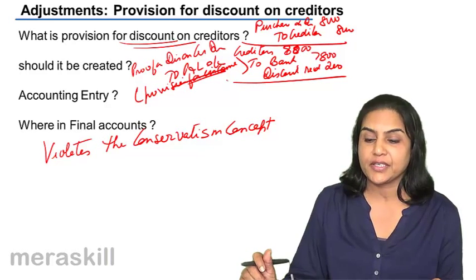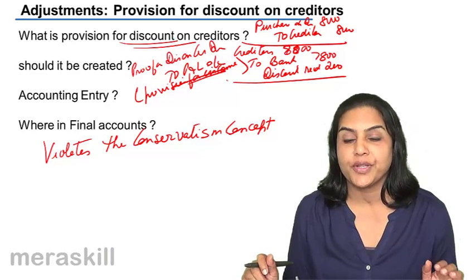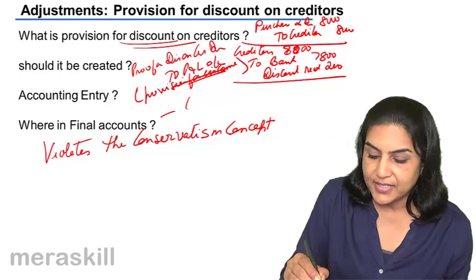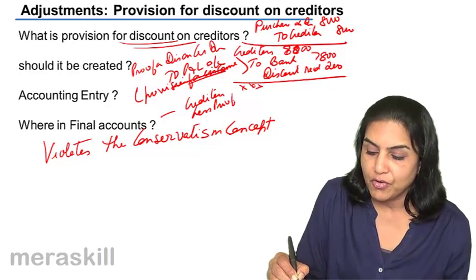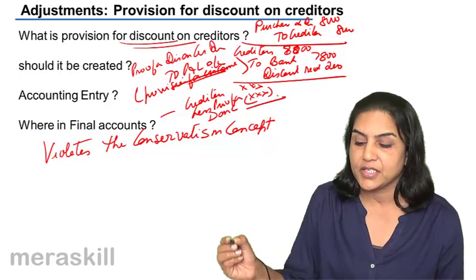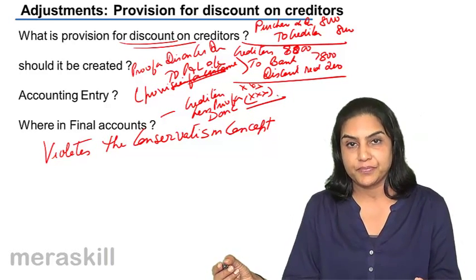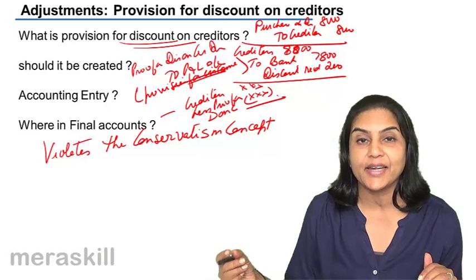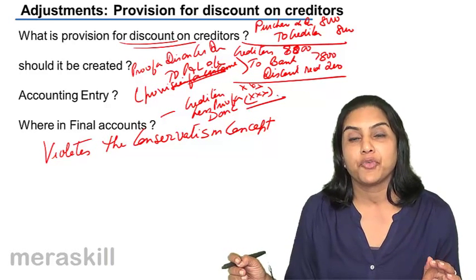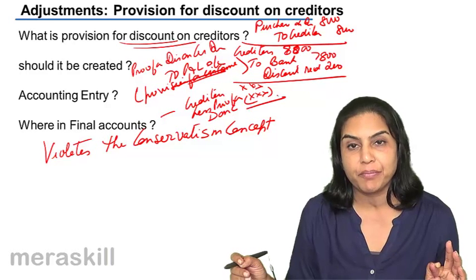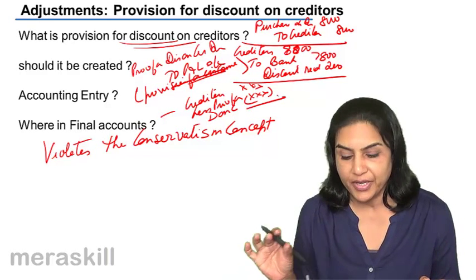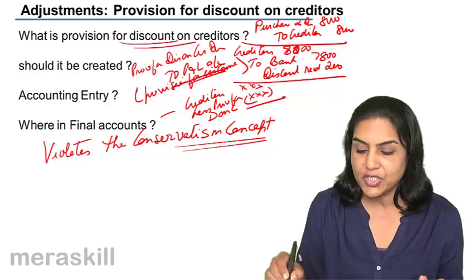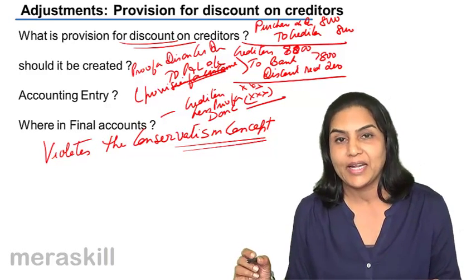The entry is: provision for discount on creditors account to profit and loss account. In the final accounts, it is shown as: creditors less provision for discount on creditors — as a deduction from creditors in the balance sheet. Providing for such discount on creditors violates the conservatism concept, or the prudence concept, and therefore is not widely used.